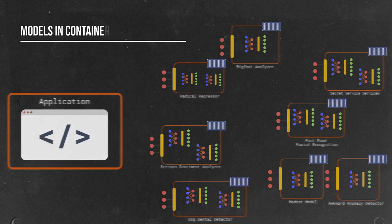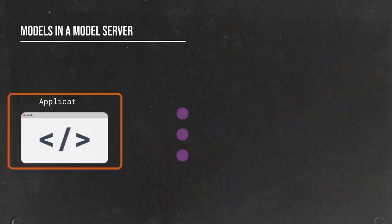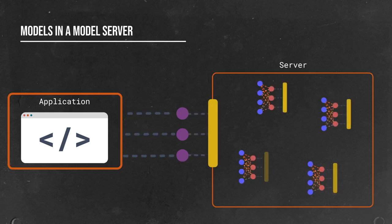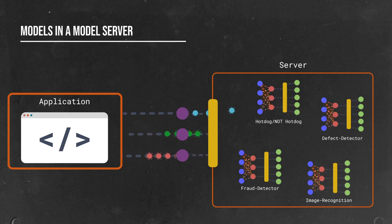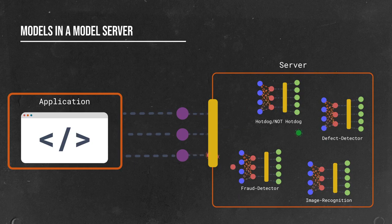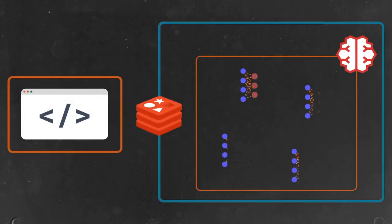The third and best solution is to use a purpose-built model server. Model servers live to host models and provide a common service interface for applications to consume. They eliminate the need for containerizing models while still providing that loose coupling between your model and your application. And this is where Redis AI comes in. Redis AI is a module that gives Redis the ability to host models and perform inferences. Redis AI makes Redis a model server.